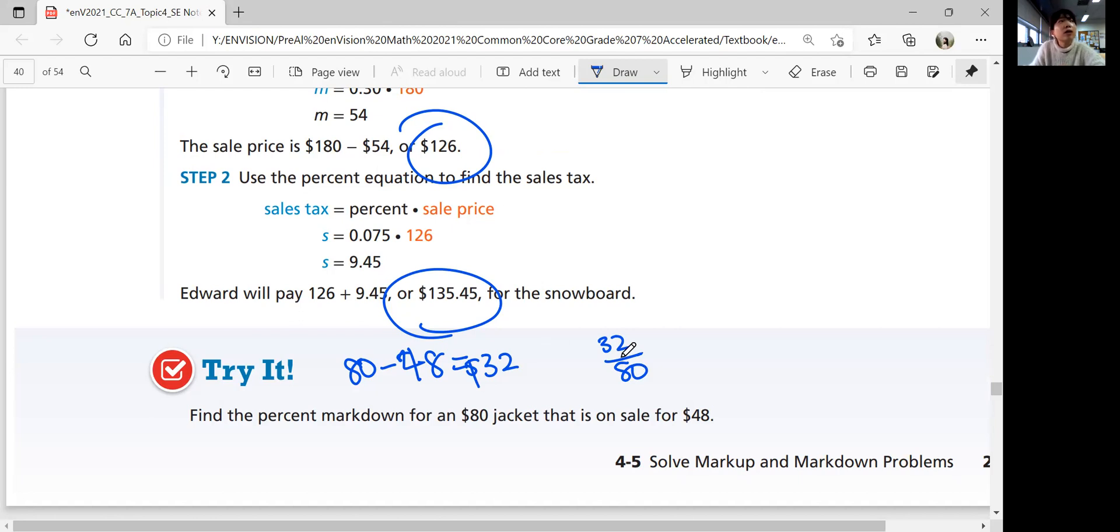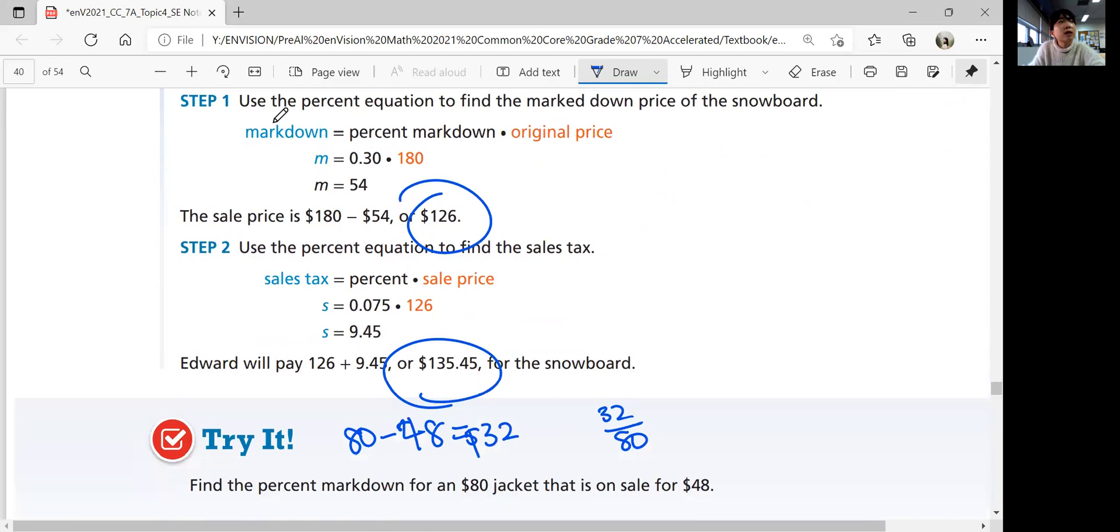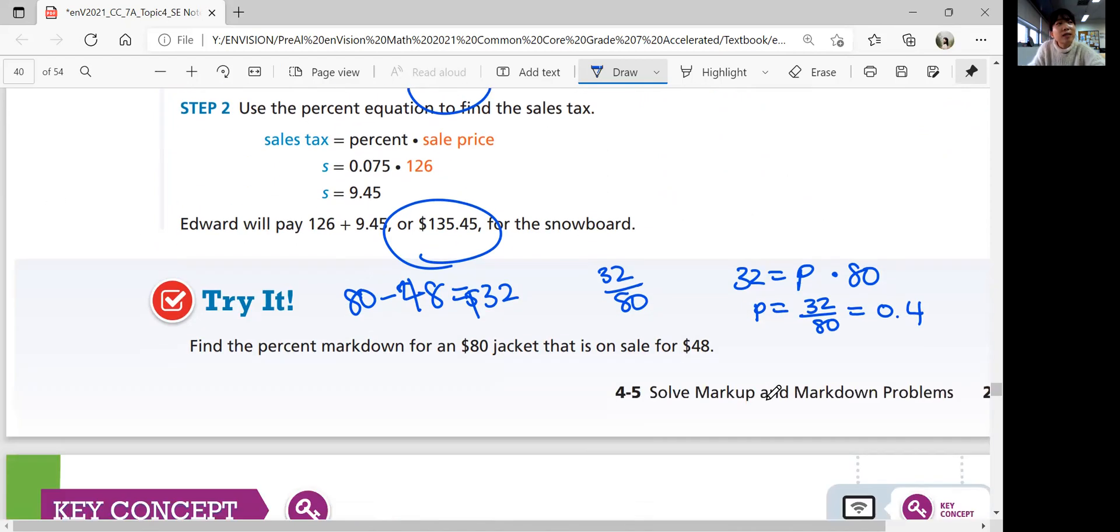You want to find how much $32 is from $80. It's going to be $32 divided by $80. But why? Because you're going to represent the markdown price. $32 equals percent markdown times the original price, $80. In order to get P, you need to divide both sides by $80. So you have $32 divided by $80. That's going to be exactly 0.4, and in percent, 40%. The $80 jacket was 40% on sale.